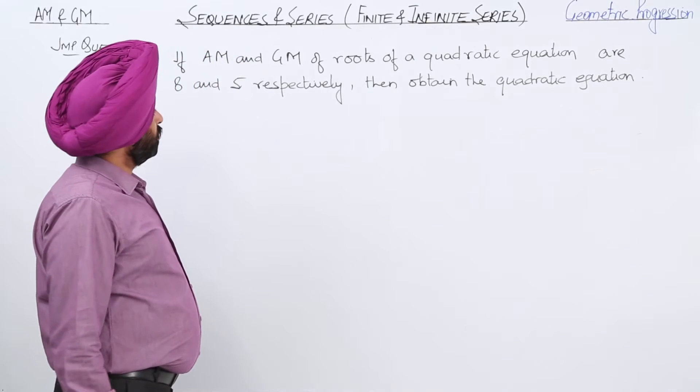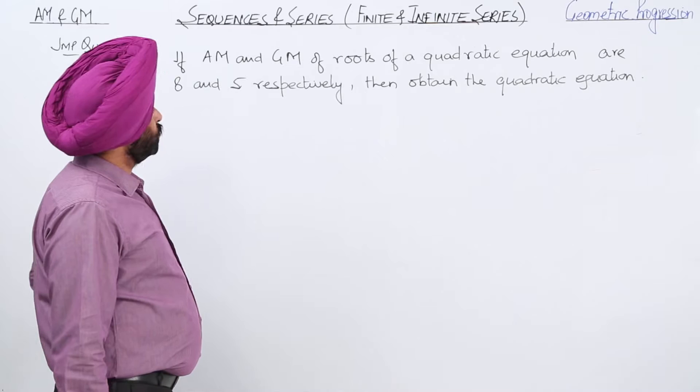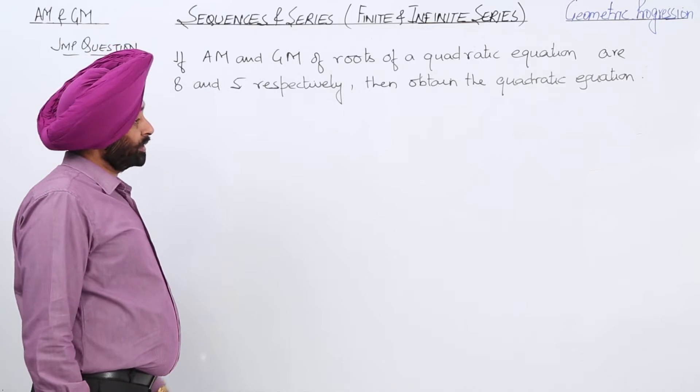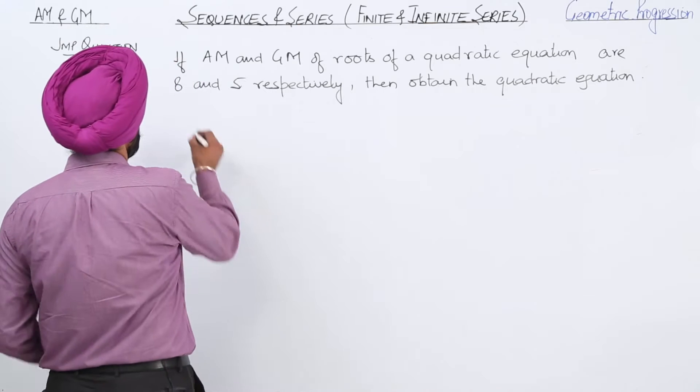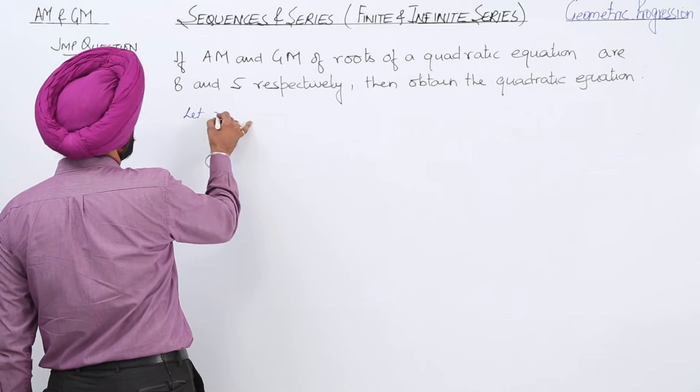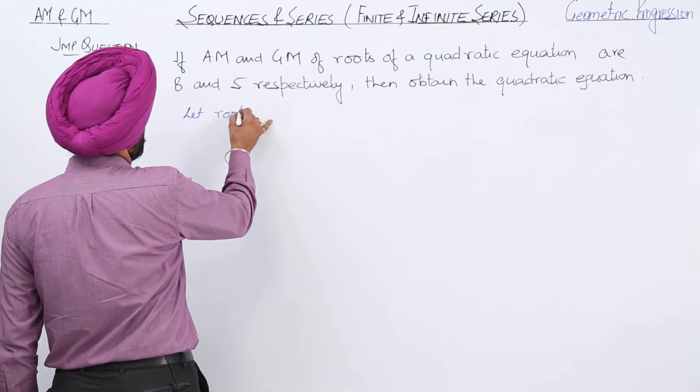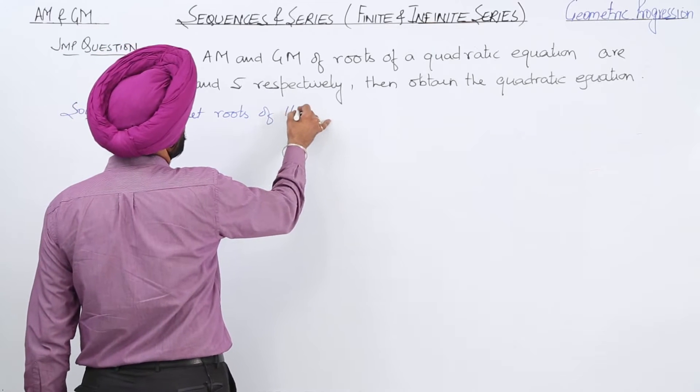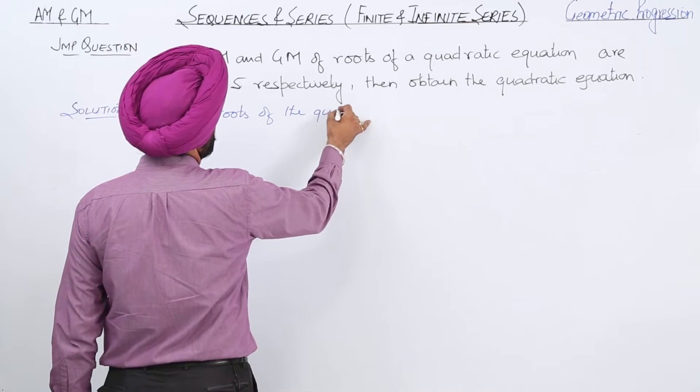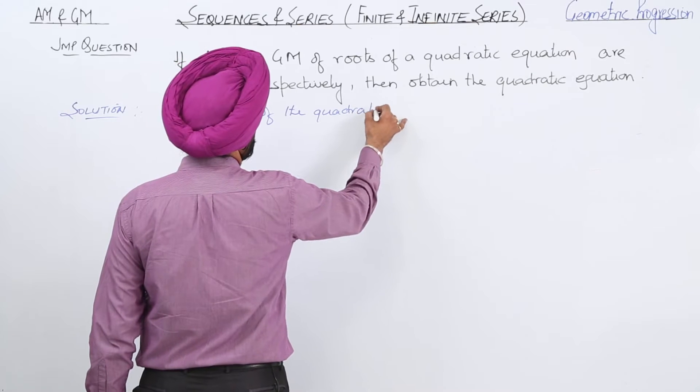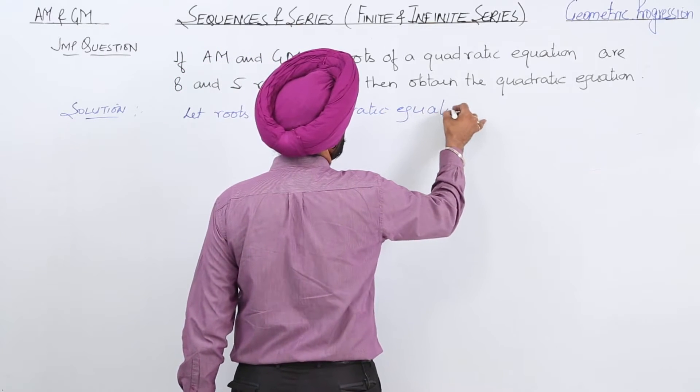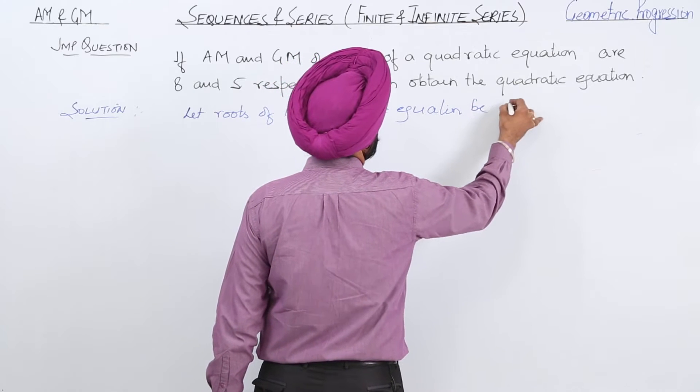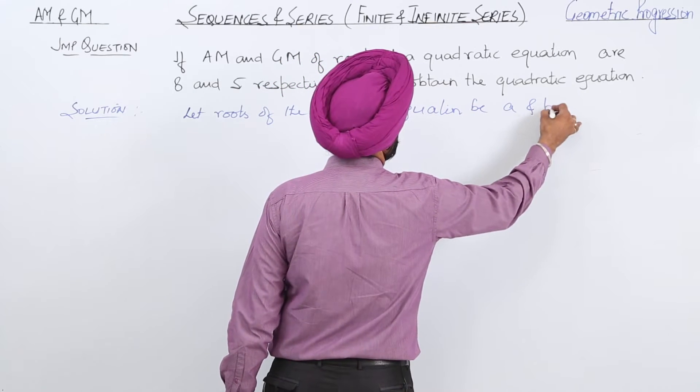If AM and GM of the roots of a quadratic equation are 8 and 5 respectively, then obtain the quadratic equation. Let the roots of the quadratic equation be A and B.